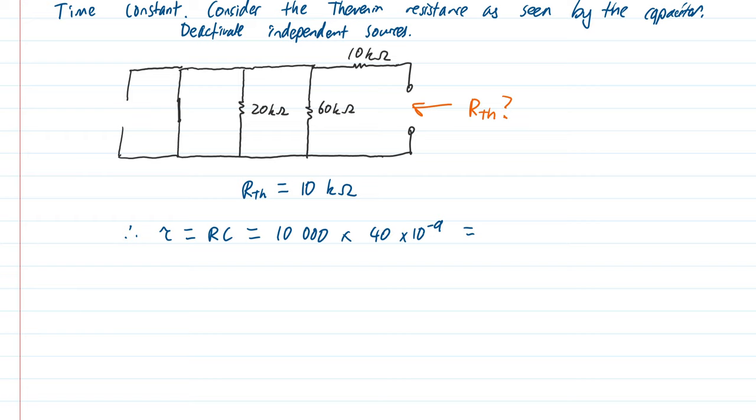So that's 10,000 times 40 times 10 to the minus 9, which is 0.0004 seconds.